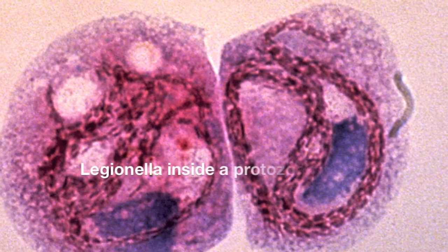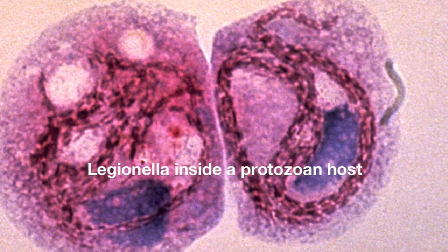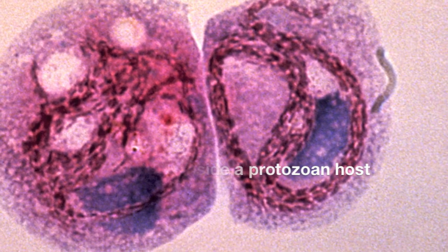Normally, a bacteria would be delivered to a lysosome where it would be digested. But instead, what Legionella is able to do is modify that vacuole or remodel it so it actually looks like the host ER, essentially setting up a cozy niche inside the host cell.